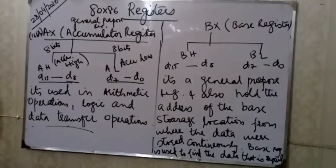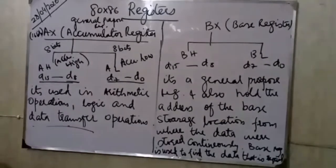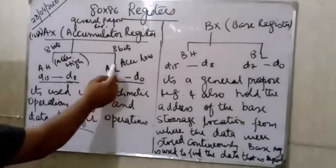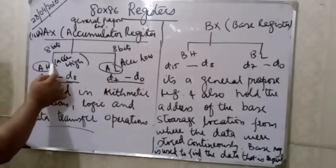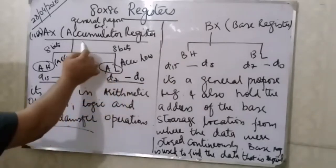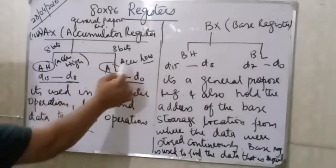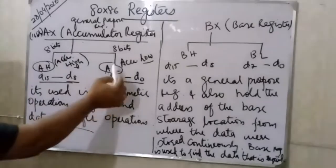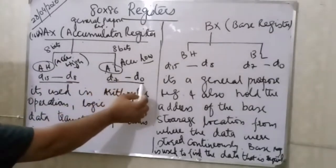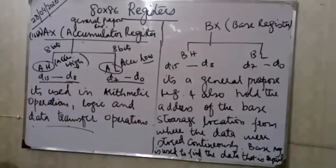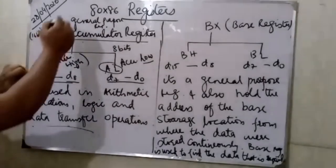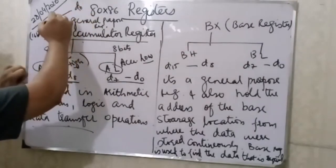The AX register is a 16-bit register. AX can be divided into two 8-bit parts: AL is the low 8 bits and AH is the high 8 bits. So AX spans bits 0 to 15, with AL covering bits 0 to 7 and AH covering bits 8 to 15.